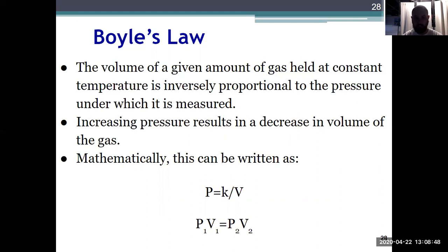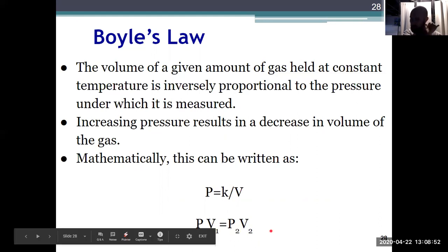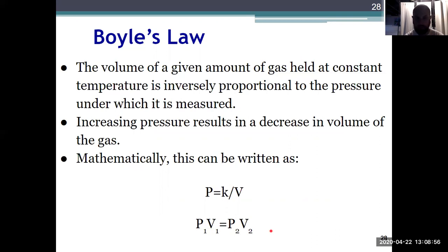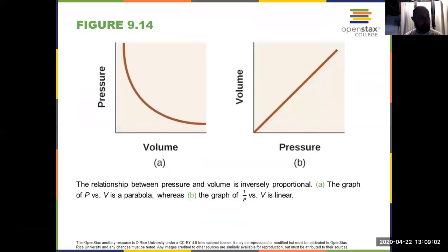So our modified version to find an initial or a final state looks a little bit different. Now it's just straight P1 V1 equals P2 V2, where P is pressure, V is volume. And this is the relationship that has pressure and volume shown graphically. Remember: volume in liters, pressure in atmospheres in chapter 9.